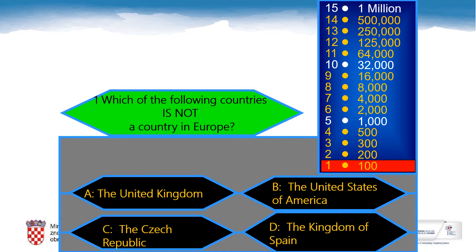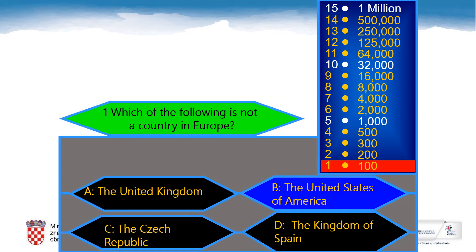Here is question number one. Which of the following countries is not a country in Europe? A: The United Kingdom, B: The United States of America, C: The Czech Republic, D: The Kingdom of Spain. Copy the answer that you believe is the correct one in your tables. You have 8 seconds. And the correct answer to the first question is, of course, the United States of America.